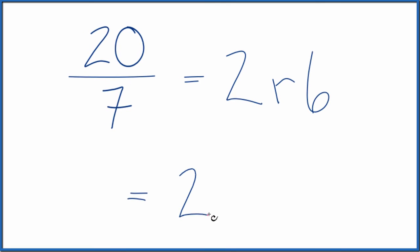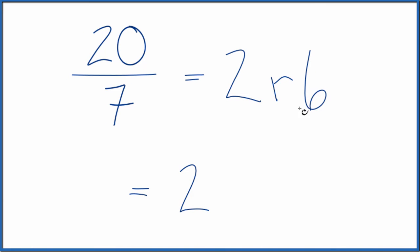We can put our 2 here, and then we take the remainder 6, put that over the denominator, 7. So twenty-sevenths is equal to the improper fraction, 2 and 6 sevenths.